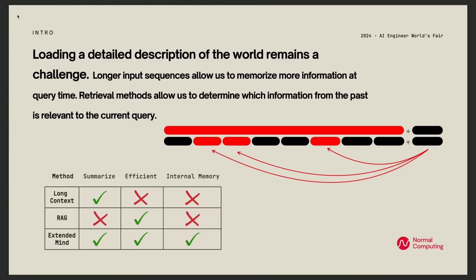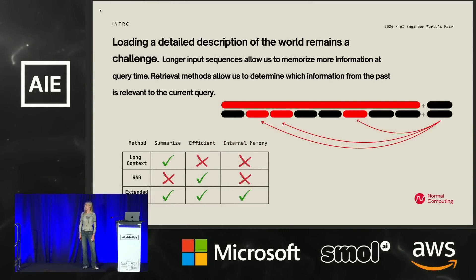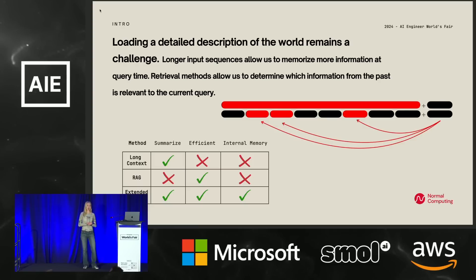We pre-train language models so that they have general knowledge, but as we've been discussing all this conference, that's not enough. We need a lot of application-specific information and a topical description of the world in order to make these things useful. I'm not going to belabor the two most popular methods which try to load this description into the language model — those being long context and RAG — as we've heard a lot about those great methods already. But I'd like to point out that they solve the problem in different ways and thus suffer from different downsides.